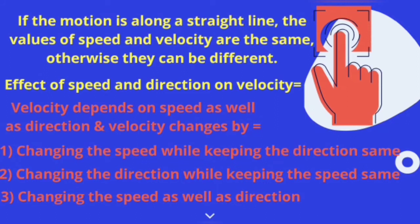If the motion is along a straight line, the values of speed and velocity are the same. Otherwise they can be different.